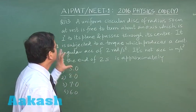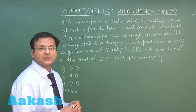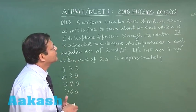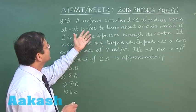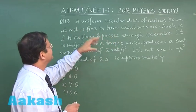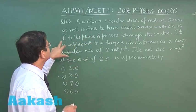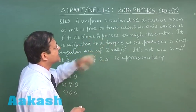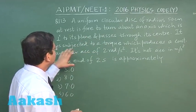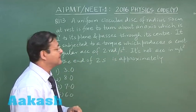Now in this question 113, you have this question based on circular motion and it is non-uniform circular motion. The radius has been given. You see a uniform circular disc of radius 50 centimeter, that is 0.5 meter, is given. At rest, it is free to turn about an axis which is perpendicular to its plane and passes through its center. Now it is subjected to a torque which produces a constant angular acceleration, alpha has been given to you.